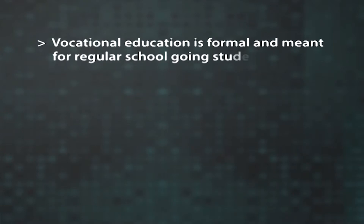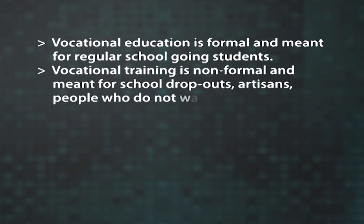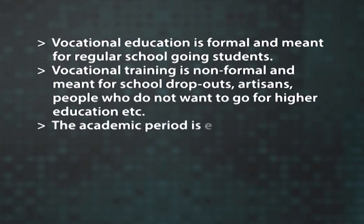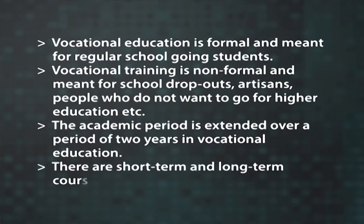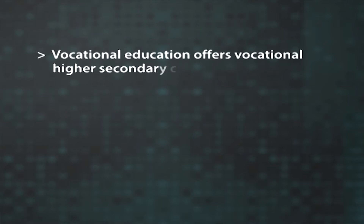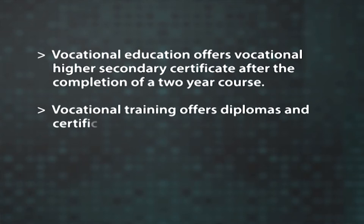The major differences between vocational education and vocational training can be summarized as follows. Vocational education is formal and meant for regular school-going students. Vocational training is non-formal and meant for school dropouts, artisans, people who do not want to go for higher education, etc. The academic period is extended over two years in vocational education, whereas there are short-term and long-term courses in vocational training. Vocational education offers a vocational higher secondary certificate after the completion of a two-year course, while vocational training offers diplomas and certificate courses.